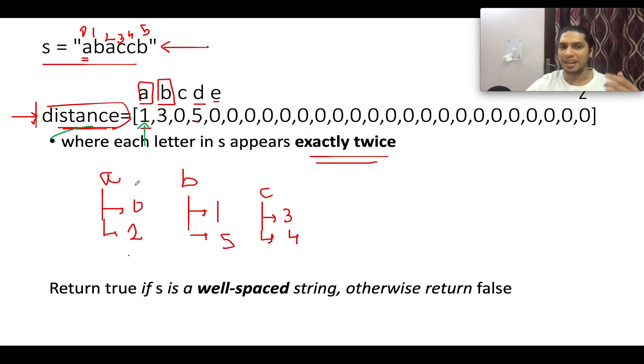we check at what two indexes does A occur. So A occur at 0, A occur at 2. With the second index, we can easily calculate the distance. The distance value would be equal to 2 minus 0 minus 1. So second index at which A occurs, first index at which A occurs, minus 1.